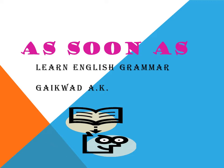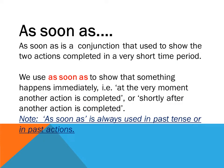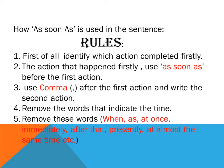Learn English grammar: 'as soon as' is a conjunction used to show two actions that happen or are completed in a very short time period. We use 'as soon as' to show that something happens immediately — at the very moment another action is completed or shortly after. Note that 'as soon as' is only used in past tense, or for actions which happened in the past.